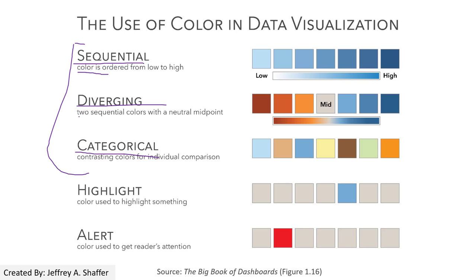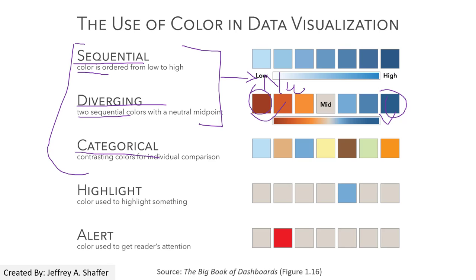Diverging means we use two types of hues, and we change either the saturation or the brightness. Both sequential and diverging are used for quantitative data. The difference is that with sequential you don't want to highlight any specific range, but with diverging you do want to highlight a specific range — like the minimum or maximum values.